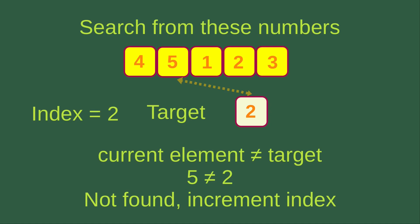We have to increment the index again. The index becomes three, and now I'm going to check the third element to see whether it equals the target or not. The current element is one, and the target is two. They are not equal to each other, so the target is still not found. We have to increment the index again.